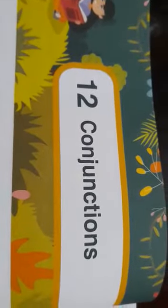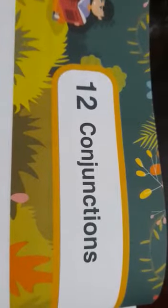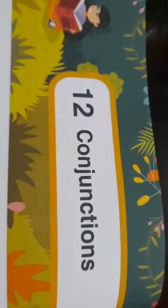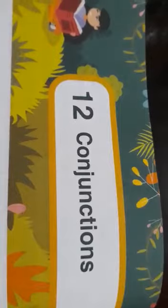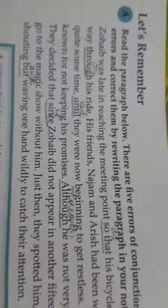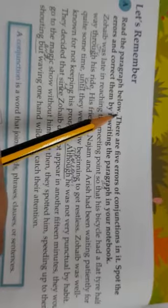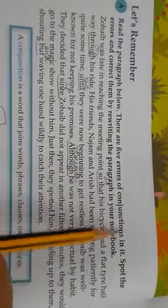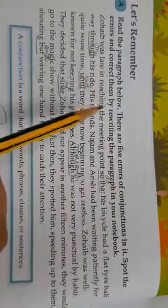Students, we are learning about conjunctions from your grammar tree for class 8. We have discussed the types and usage of conjunctions. Today we are going to have a look at exercise A, which is on page number 70. The question says: read the paragraph below — there are five errors of conjunctions in it; spot the errors and correct them by rewriting the paragraph.